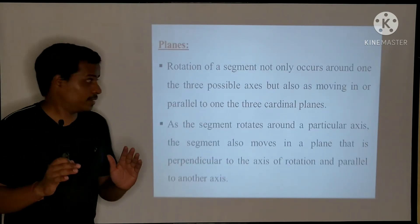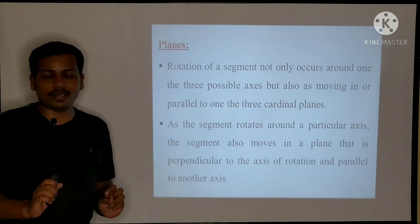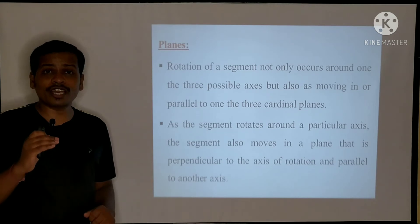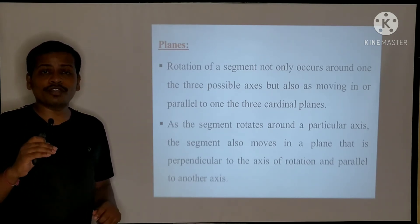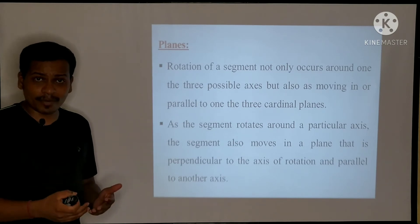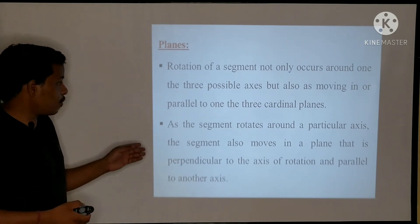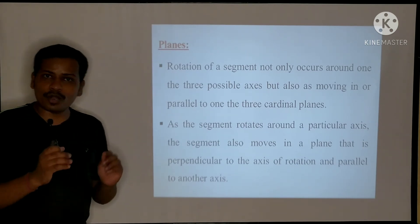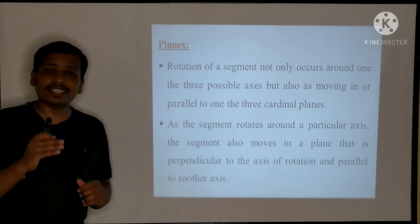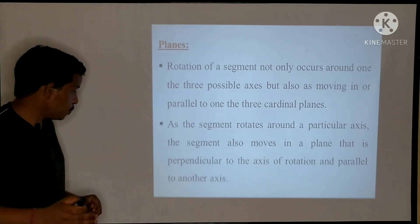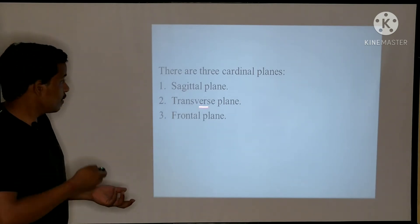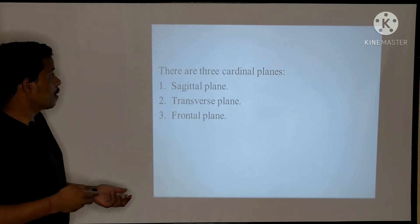Now let us see what planes are. The rotation of a segment not only occurs around one of the three possible axes — X, Y, and Z — but also the motion occurs in and parallel to one of the three possible planes. The three planes are the sagittal plane, transverse plane, and coronal plane, also known as cardinal planes. As a segment rotates around a particular axis, it also moves in a plane that is perpendicular to that axis and parallel to another axis.